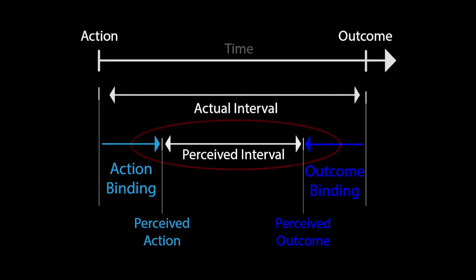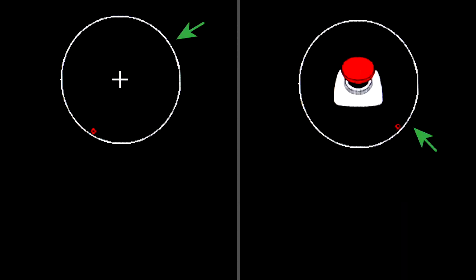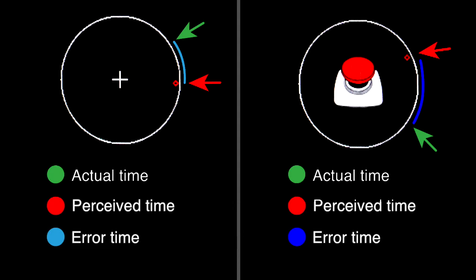If this perception of compression of time is higher, that means higher sense of agency. Participants judge their perception of time by reporting the position of a rotating dot around a clock.